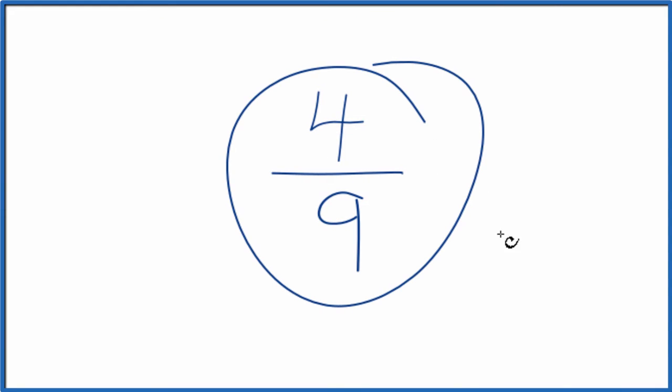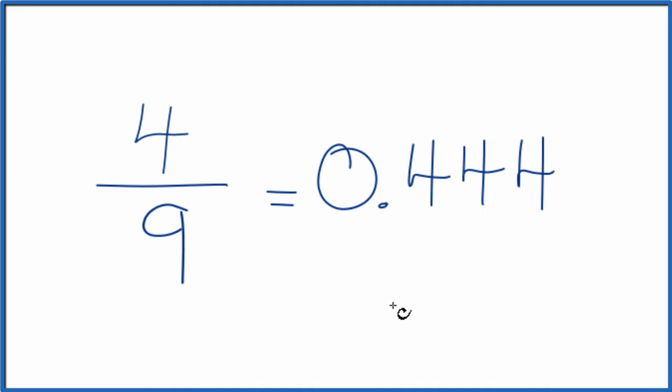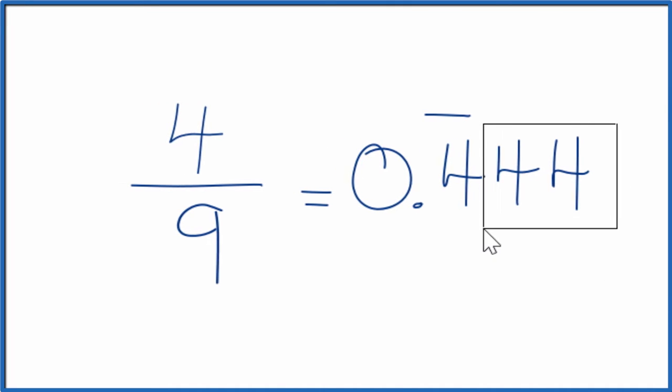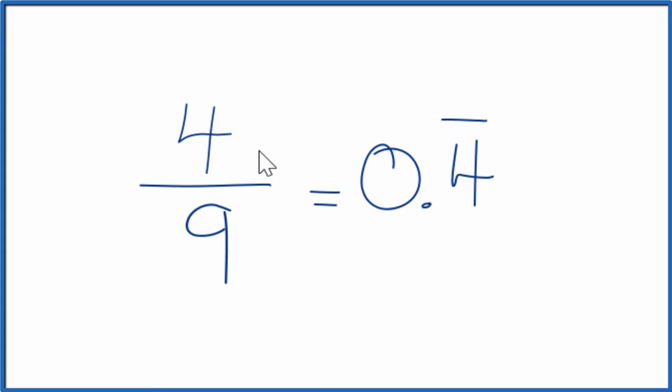Let's convert the fraction 4 ninths to a decimal. There's two ways we could do it. One is we could just put 4 divided by 9 in our calculator and we'd end up with 0.444 and the 4s keep repeating. So let's just put a bar over this 4 to show it repeats. And that's one way you could convert the fraction 4 over 9 to a decimal.